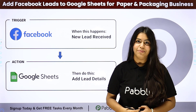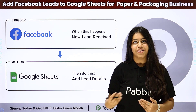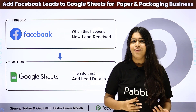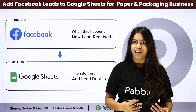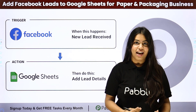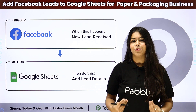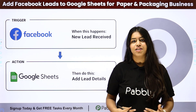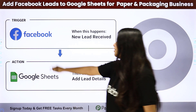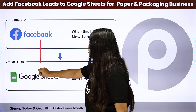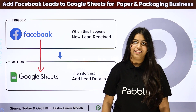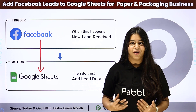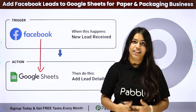I run a paper and packaging business and to promote my business, I am running certain Facebook lead ads. Whenever I receive a new lead in my Facebook lead ads, it should be automatically transferred to my Google Sheet. For this, we have to create an integration between Facebook and Google Sheets using the amazing automation software Pabbly Connect.